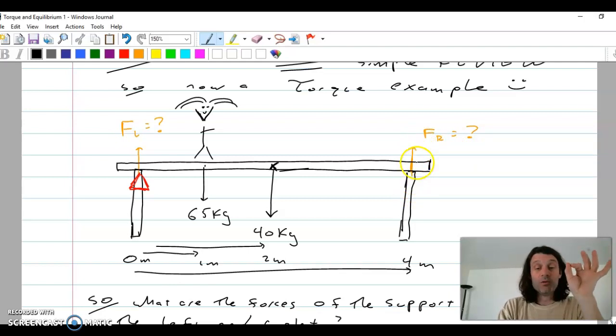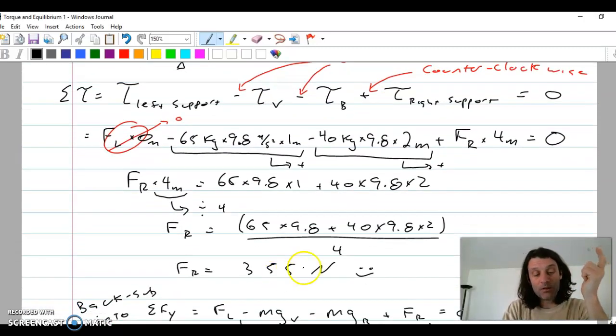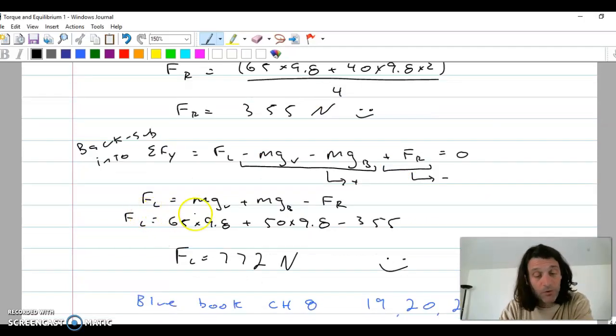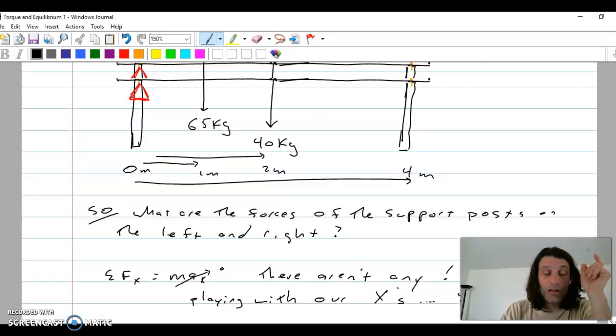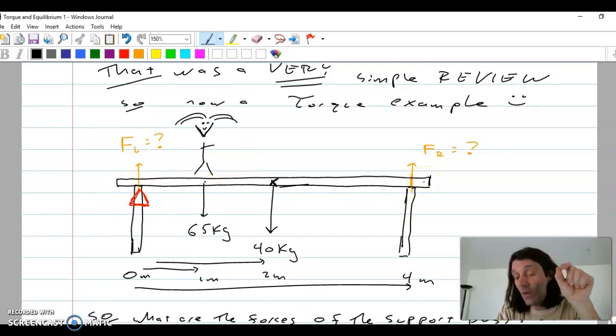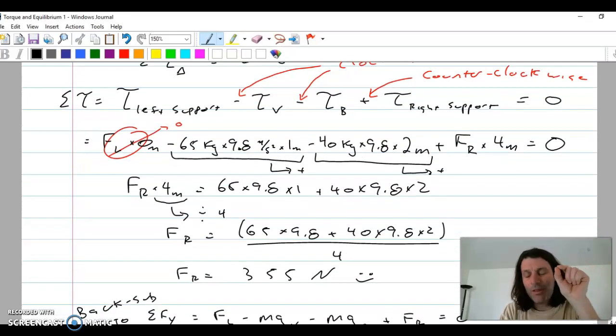Now, what we'll do then once we have that force of the beam on the right is the same thing we did with the sum of the forces in the wire. And I will back sub that number into the sum of the forces in the wire. So now that I know that the force on the right, what that quantity is, I can say, well, there's a force on the left minus the two forces of gravity. It equals nothing. So I put it back in there. Force on the left is the mass of gravity of me, which is 65 times 9.8 plus the mass gravity of the beam, 50 times 9.8, minus that 355, 772 newtons. So please realize that's 770-something. This one's only 350-something. It makes sense because I'm much closer to this beam than that one. So this one is supporting a lot more of the force. And we did that again by just summing the torques around that triangle.